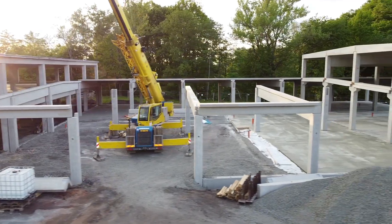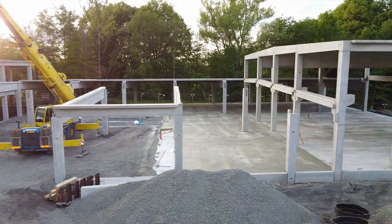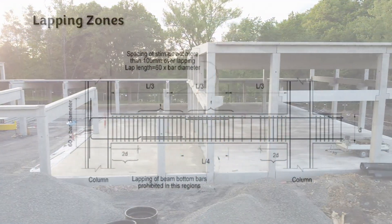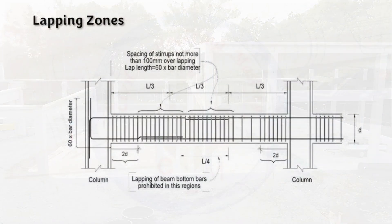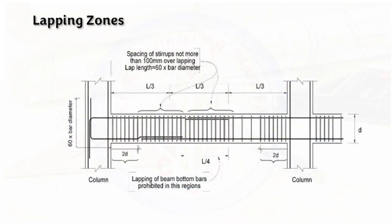Without further delay, let's begin. Lapping zone refers to the region where overlapping of two bars is recommended for proper load transfer. You can see from this picture, here we have the lapping of two bars. This is the region where we lap the bars - in this region we overlap the two bars.